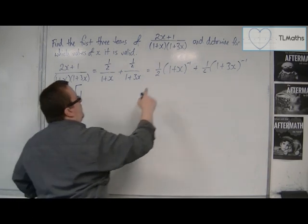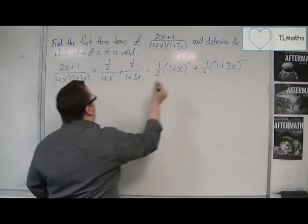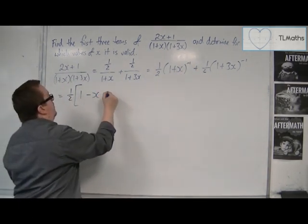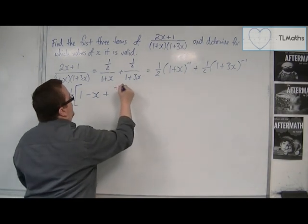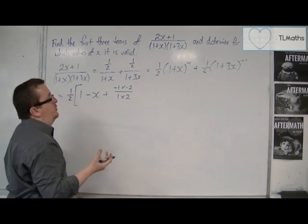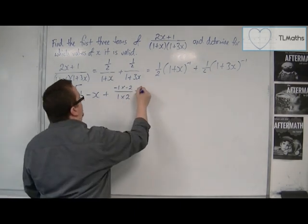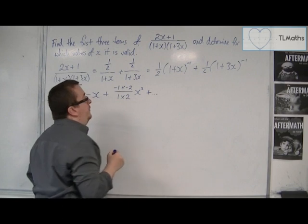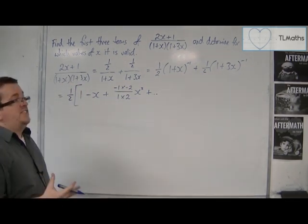So 1 plus minus 1 times x, so minus x. Plus n times n minus 1 over 1 times 2, or 2 factorial, times x squared. Plus other terms. That's the 1 plus x to the minus 1.